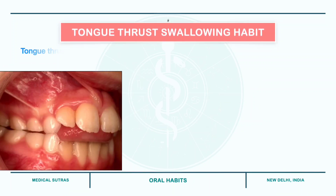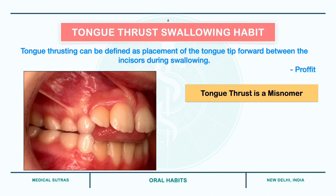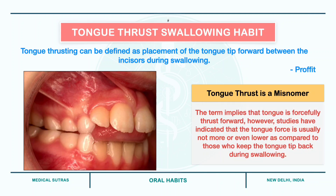According to Profit, tongue thrusting can be defined as placement of the tongue tip forward between the incisors during swallowing. An important point to note here is that the word tongue thrust is actually a misnomer. It implies that the tongue is forcefully thrust forward. However, studies have indicated that the tongue force is generally not more, or even lower, as compared to those who keep the tongue tip back during swallowing.